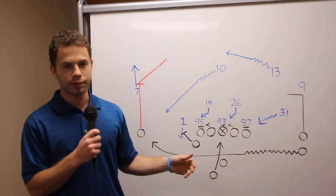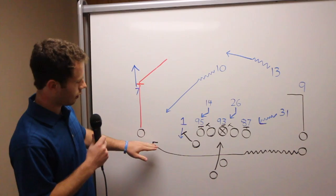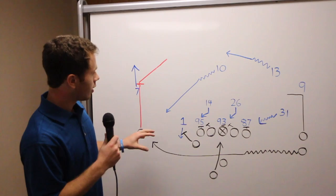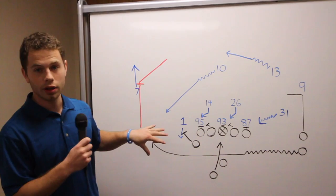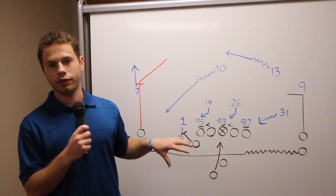Then the second part is, as the receiver continues across the formation and runs a swing route into the flat, Patrick Mahomes looks at the swing and fakes a throw there. This captures the attention of Stephen Parker, who then completely sells out to defend the swing pass and sprints down in an effort to cover the flat.